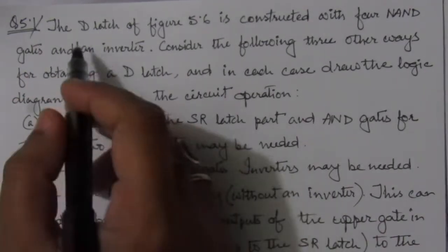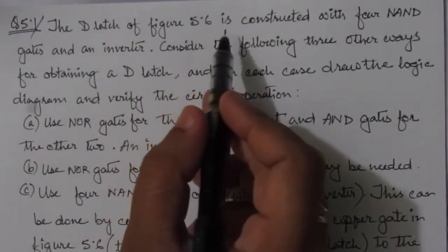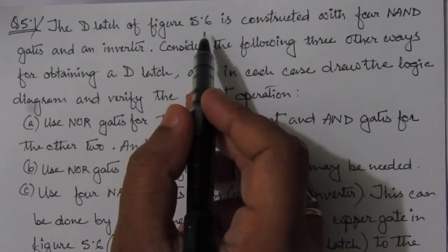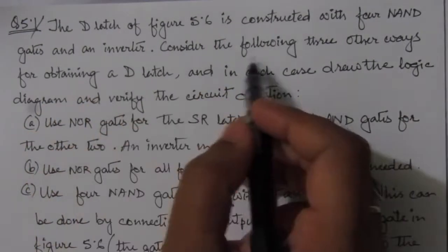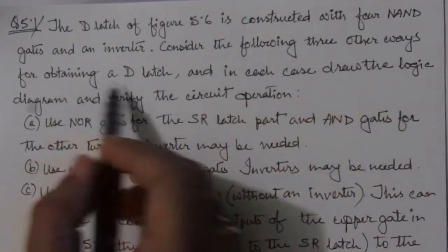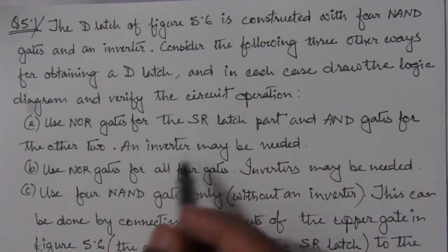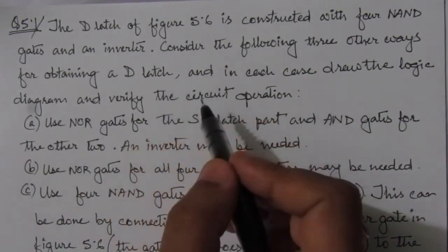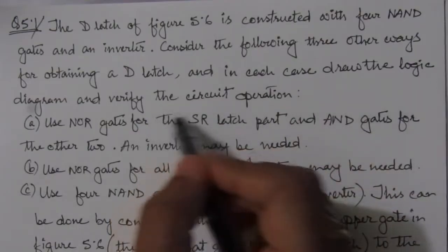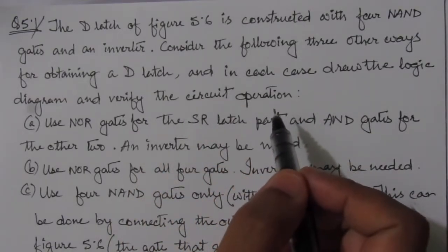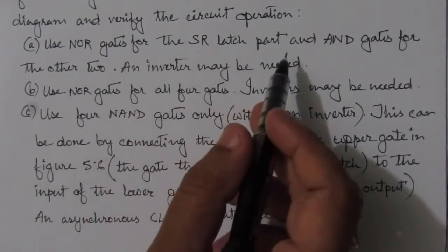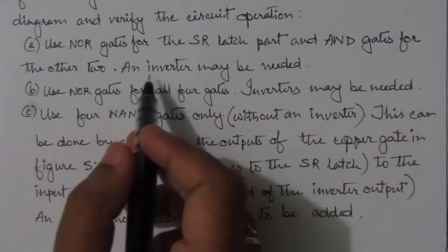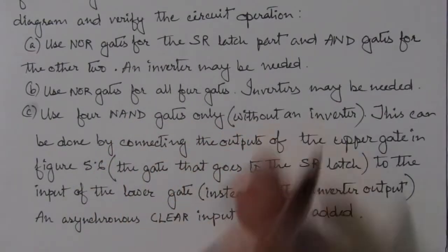The problem is the D latch of figure 5.6 — this figure is from inside the chapter, from the fourth edition book. It is constructed with four NAND gates and an inverter. We consider three other ways for obtaining a D latch, and for each we have to design a D latch using NOR gates for the SR latch part and AND gates for the other two parts. An inverter may be added.